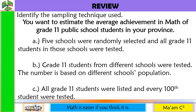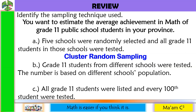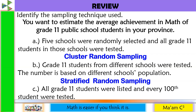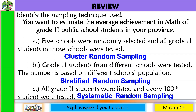Let's have a quick review of our previous lesson. Identify the sampling technique used. You want to estimate the average achievement in math of grade 11 public school students in your province. Letter A: five schools were randomly selected and all grade 11 students in those schools were tested — this is cluster random sampling. Letter B: grade 11 students from different schools were tested, the number based on different schools' population — this is stratified random sampling. Letter C: all grade 11 students were listed and every 100th student was tested — this is systematic random sampling.